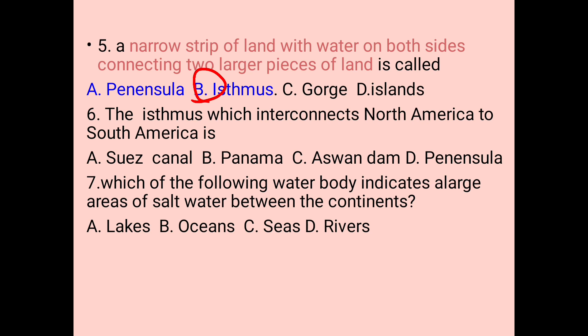Question six: the isthmus which interconnects North America to South America is: A. Cuscanan, B. Panama, C. Aswandan, D. Venezuela. Panama isthmus interconnects North America and South America, so the answer is B. Question number seven: which of the following water bodies indicates a large area of salt water between the continents? A. Lakes, B. Oceans, C. Cuscanan, D. Rivers. Oceans indicate large areas of salt water between the continents, so the answer is B.